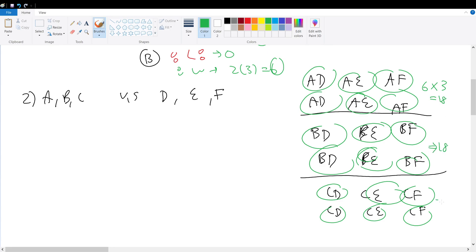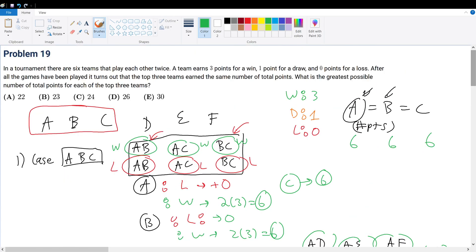So therefore, this sums up all the cases. Eighteen points won from versing D, E, and F, and the six points won from versing amongst themselves, will give us the final answer of 24. Therefore, your final answer will be answer choice C.